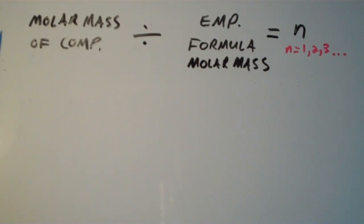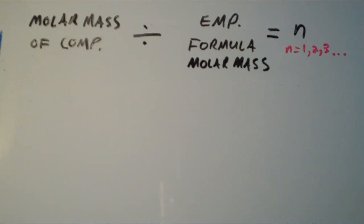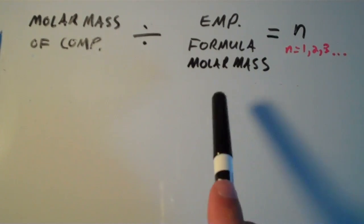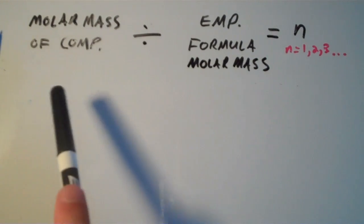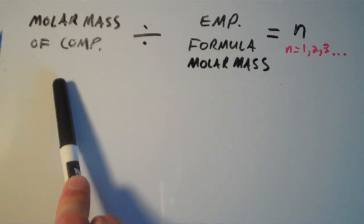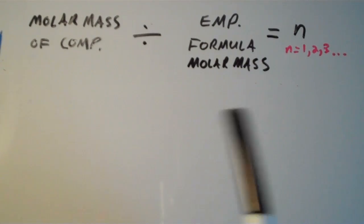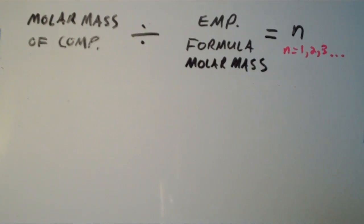From there you can calculate n and thus your molecular formula. So all we need are the empirical formula and the molar mass of our compound, and we can calculate the molecular formula. Let's do an example.